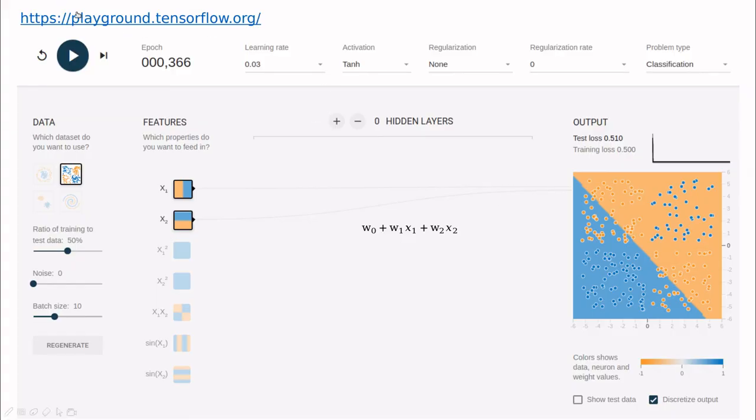But before that, again, I recommend you to go to this page and then play a little bit, and try to have some intuition about the role of using more inputs and using zero hidden layers.